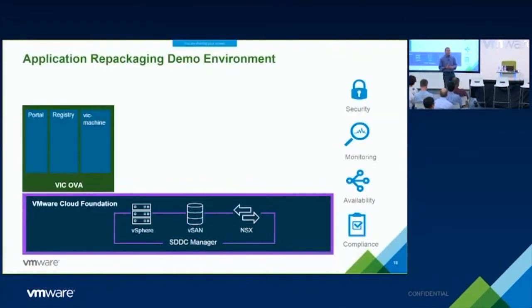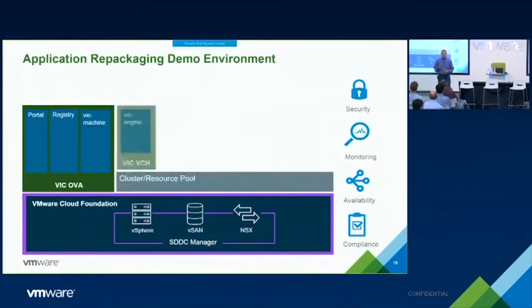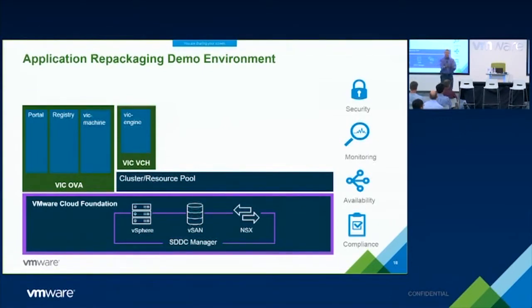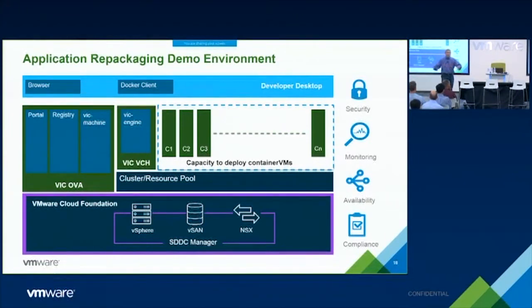My VI admin has deployed VIC. VIC comes as an OVA, and when you deploy the VIC OVA you get three components: a portal, a container registry, and a program called Vic Machine. Vic Machine is what you use to create something called a virtual container host. A virtual container host is an endpoint that's mapped to a resource pool and acts like a Docker host. Once that host exists, I can use a Docker client — here on my development desktop — to interact with the portal, the registry, and VIC Engine. I can create and destroy containers to my heart's content within the capacity allocated through that resource pool. That's the setup for the demo.